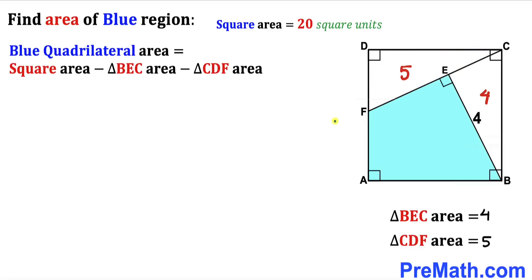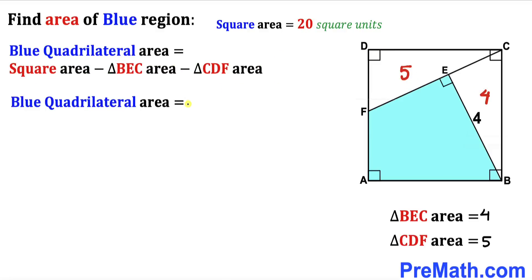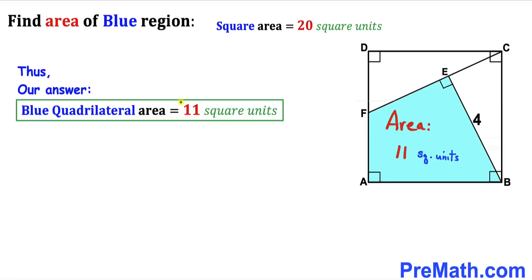Here's the final step. The area of the blue shaded quadrilateral equals the area of square ABCD minus the area of triangle BEC minus the area of triangle CDF: 20 minus 4 minus 5 equals 11 square units. So the area of this blue shaded quadrilateral turns out to be 11 square units.